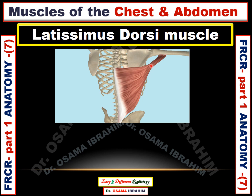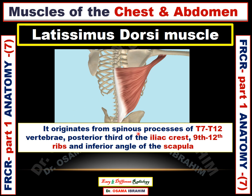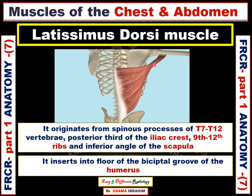The muscle arising from these locations and extending to the arm is called the latissimus dorsi muscle. The latissimus dorsi muscle originates from the spinous processes of T7–T12 vertebrae, also from the posterior crest of the iliac crest and the inferior angle of the scapula. All these sites are the origin of that muscle, and it inserts by a thin tendon into the floor of the bicipital groove of the humerus.